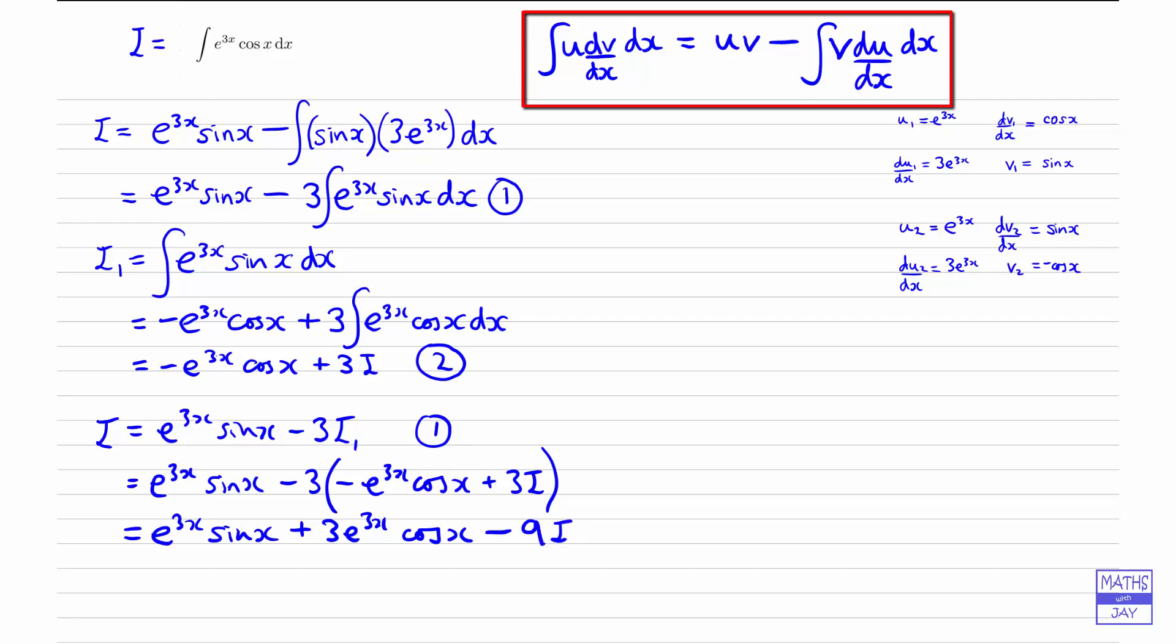So now we just add 9i to both sides to get 10i on the left-hand side. And then on the right-hand side, we could simplify by taking e to the 3x outside a bracket. And we've got sinx plus 3 cosx. And we're nearly there.